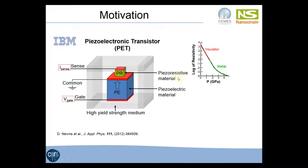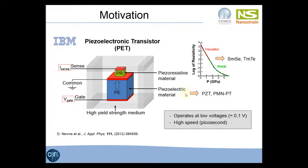The materials considered for this application are chalcogenides, such as samarium selenide for the piezoresistive, and PZT or PMNPT for the piezoelectric materials. The advantage of this structure is that the power consumption is quite low and it works relatively fast compared to standard MOSFET devices. This is why we need to measure strain at the nanoscale in PZT and piezoelectric materials.